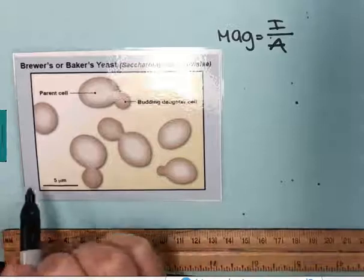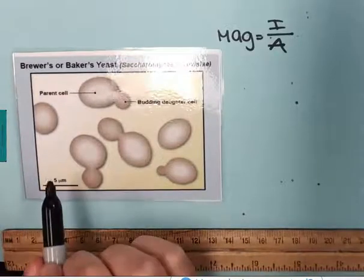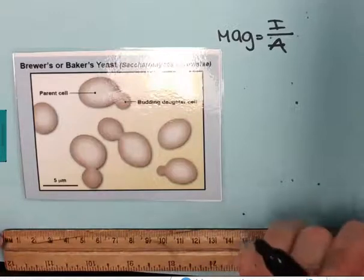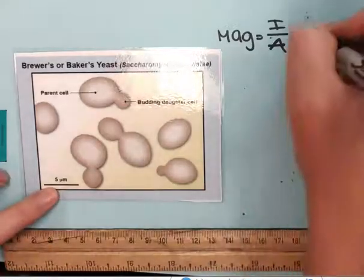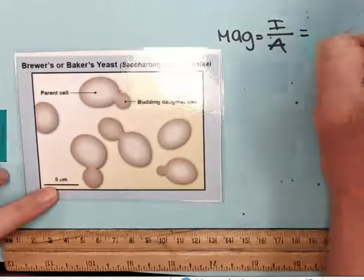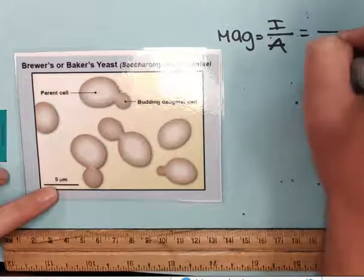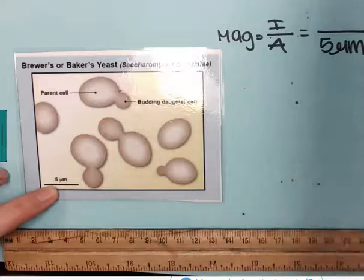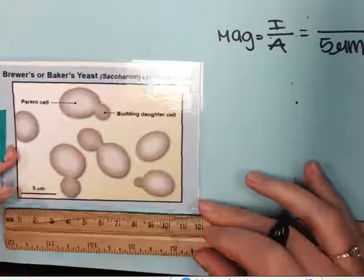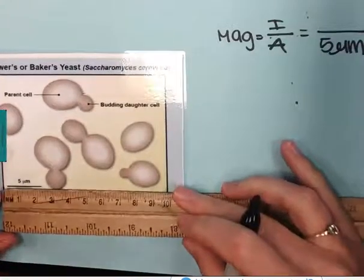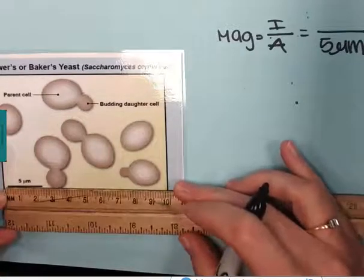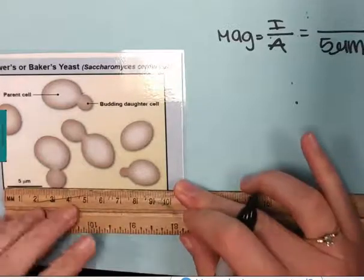I'm going to start with the scale bar because that's always kind of what's going to give me the information I need. It's a known value. In this case, the actual is five micrometers, and I'm going to measure that and it is approximately 21 millimeters.